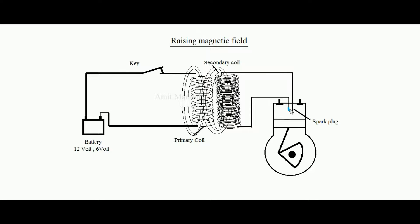If the key is kept closed, the magnetic field rises from zero to maximum over a small duration, but once it reaches maximum value no more spark will develop. This is because the rate of change of magnetic flux is responsible for developing current in the secondary coil — once the magnetic field becomes stagnant, no more spark is produced.